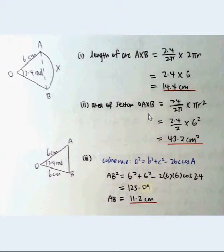To find the area of sector OAXB, we take 2.4 over 2π times πR², where πR² is the area of the circle. R equals 6, and therefore the area equals 43.2 cm².